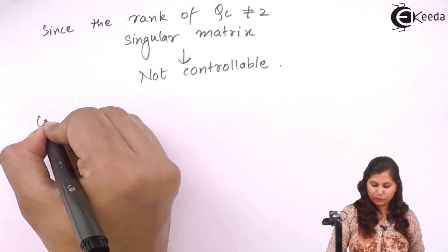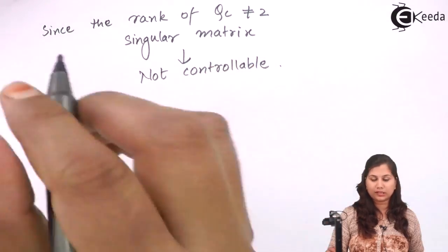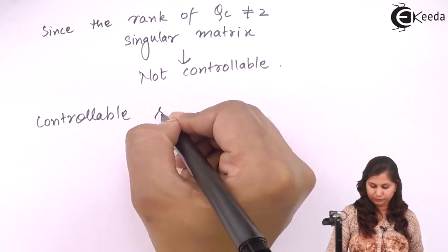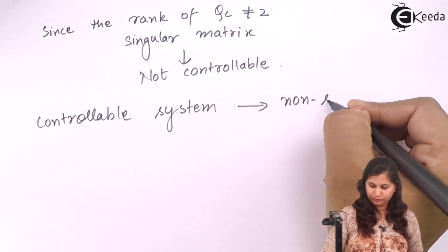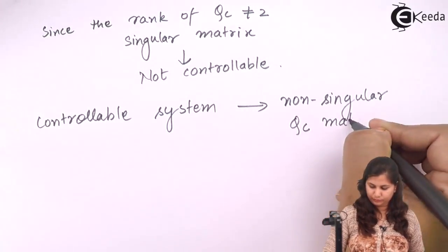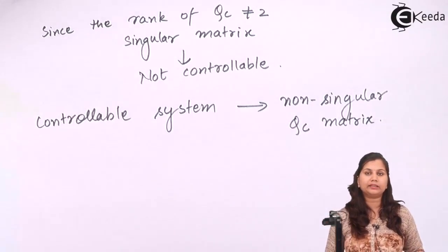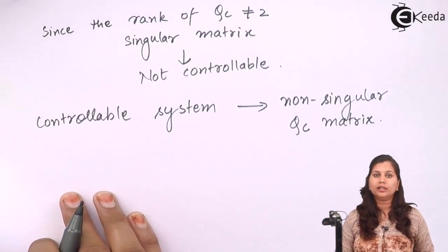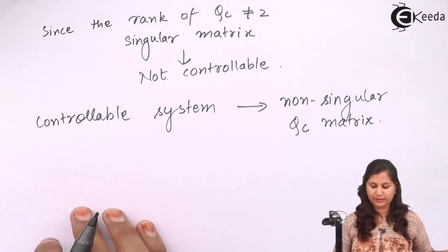For a system to be controllable, the matrix should be non-singular. This is how we can determine the controllability of a system whose state model is given to us.